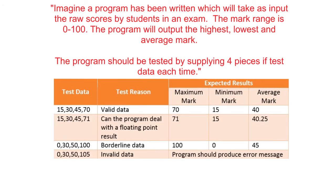So here we have four possible tests and their test data — obviously other answers are acceptable. The first test is designed to accept valid data. We've given it four valid bits of input data. Test scores are allowed to be between 0 and 100; we've given it 15, 30, 45, and 70. We'd expect the maximum mark to be 70, the minimum 15, and the average 40. The next test is also designed to test valid data, with four valid scores all in the range of 0 to 100.